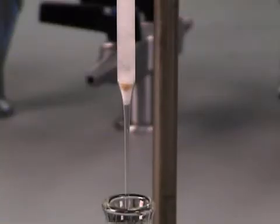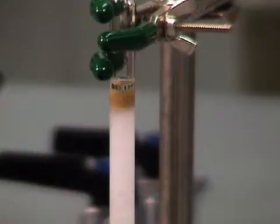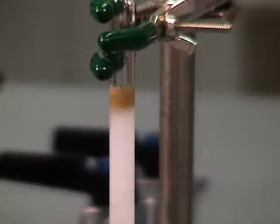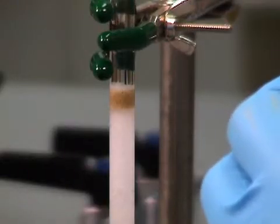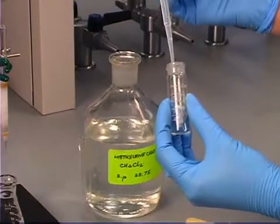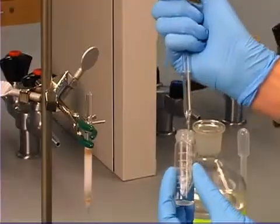Add solvent to wet the column, and allow the solvent to flow through before adding your compound. Rinse the reaction vial with additional solvent, and add this to the column.